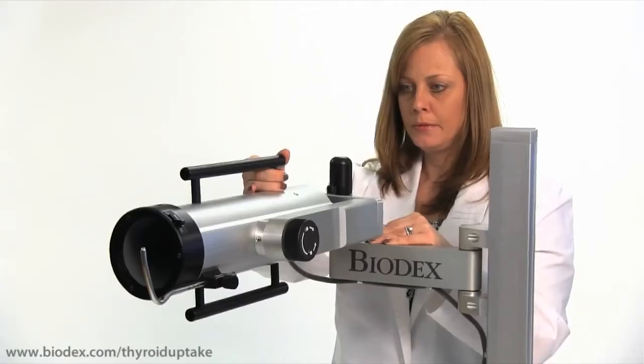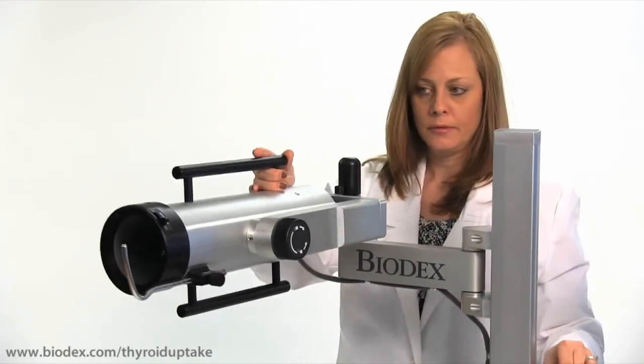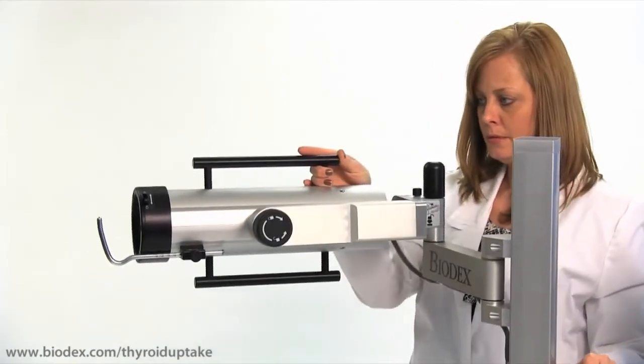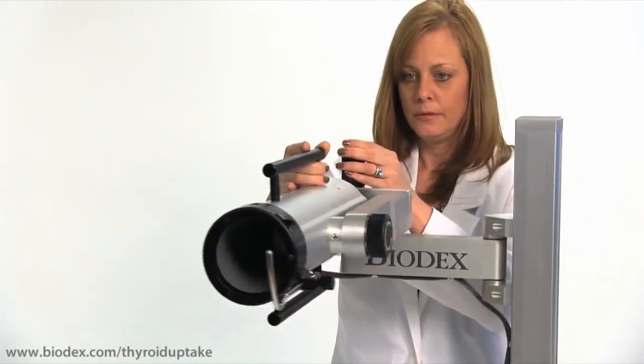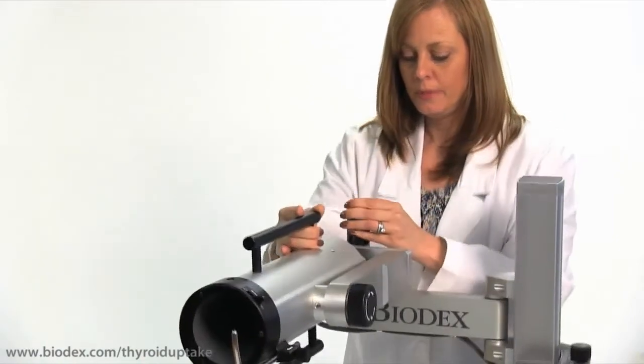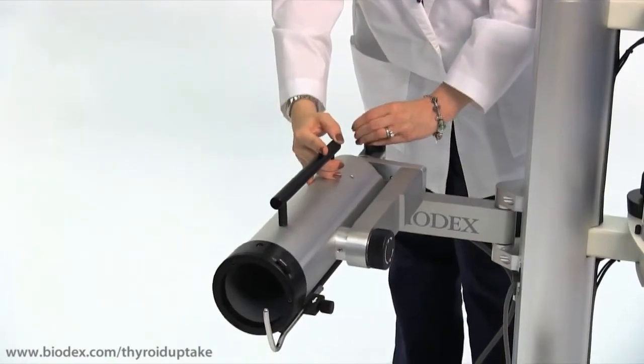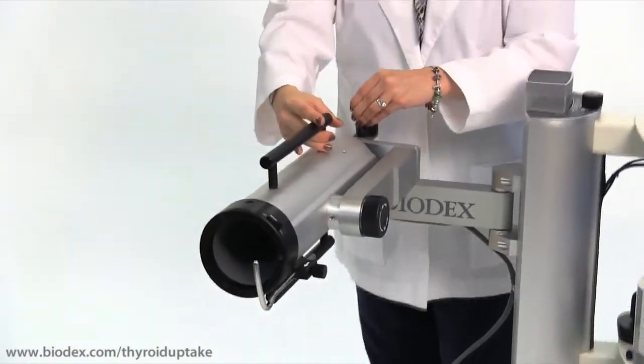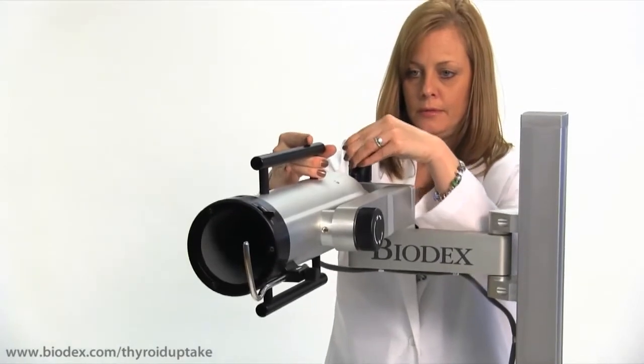A 2x2 sodium iodide detector with collimator shield articulates on a multi-axis and height-adjustable counterbalanced arm. The 24.5 inches of vertical travel allows the probe to be positioned from 30.5 to 55 inches in the horizontal position from the floor to accommodate seated or supine patients.